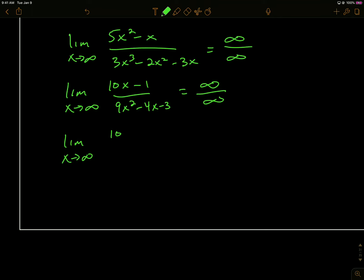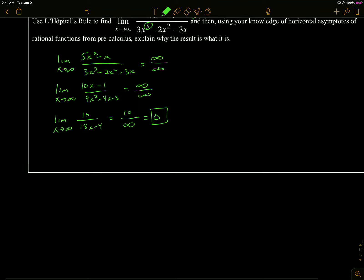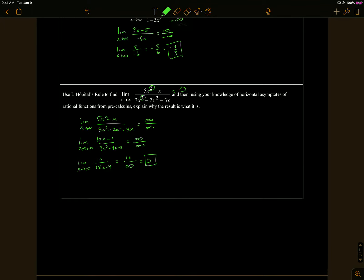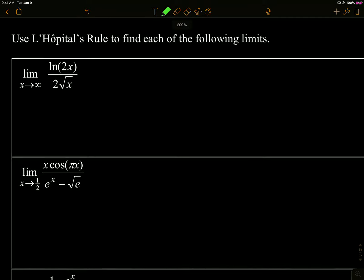So L'Hôpital again. I'm going to get 10 over 18x minus 4. If I plug infinity into that, I get 10 over infinity, which is zero, right? Because the bottom is getting larger and larger and larger, 10 is staying constant. That jives with what we said about horizontal asymptotes. So on this one I had to L'Hôpital twice again.